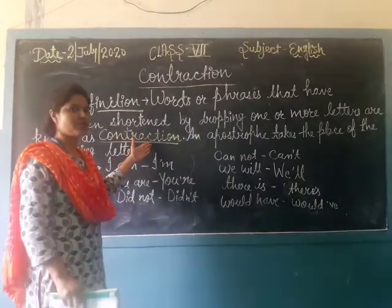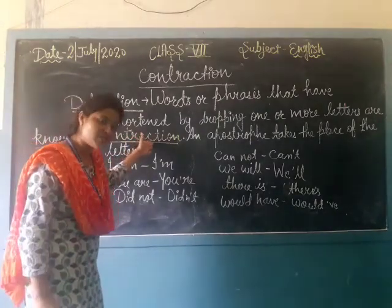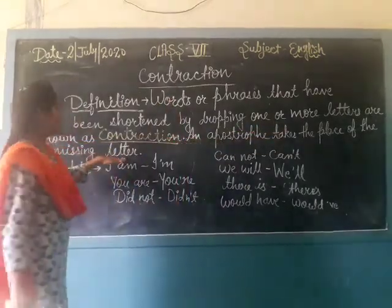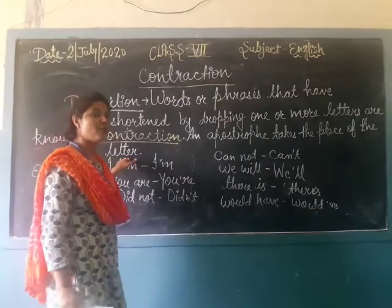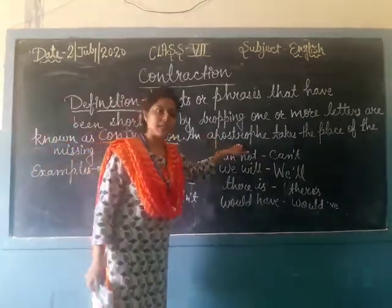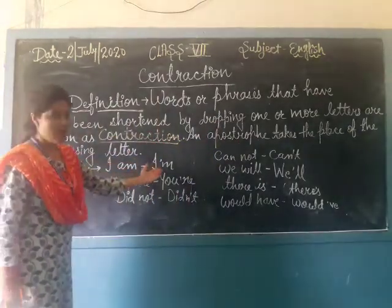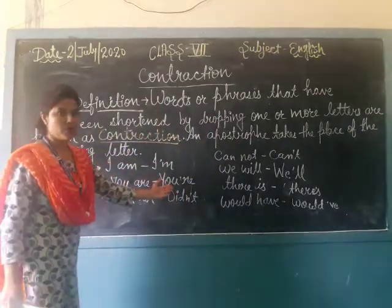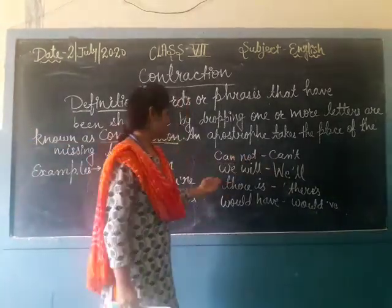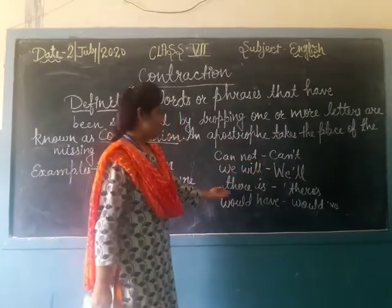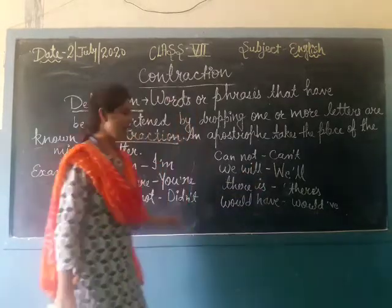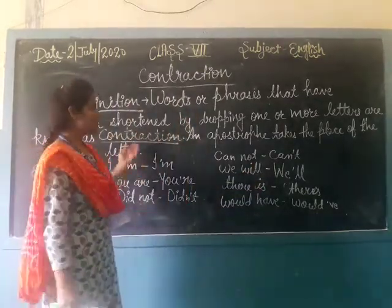Contraction is also known as short form. An apostrophe takes the place of the missing letter. When we convert a word to short form, we use an apostrophe — like: I am → I'm, you are → you're, did not → didn't, cannot → can't, we will → we'll, there is → there's, would have → would've.